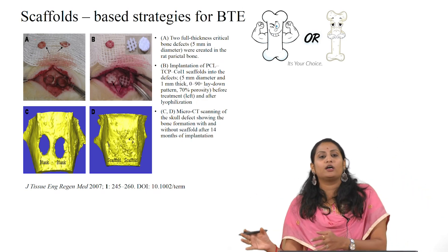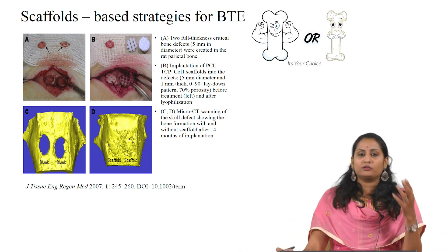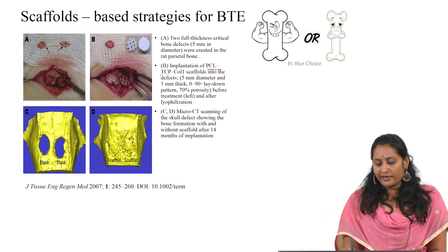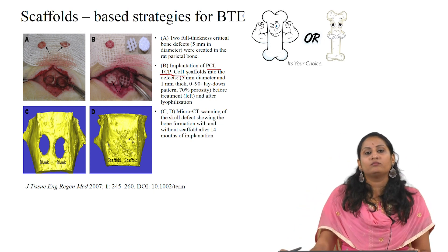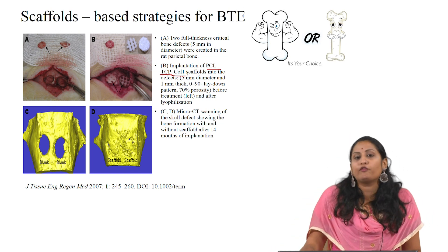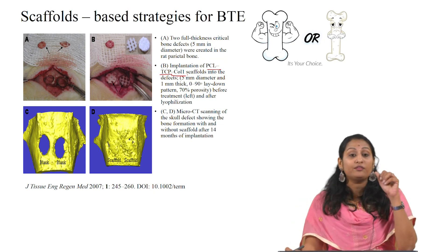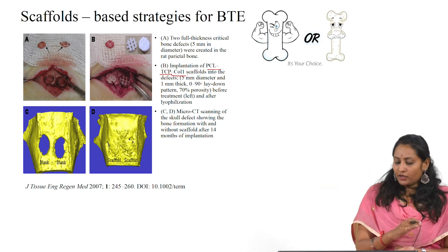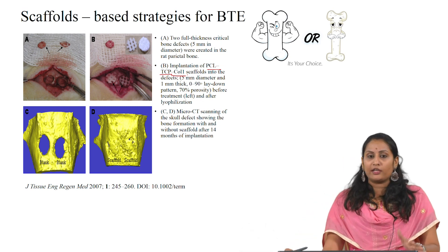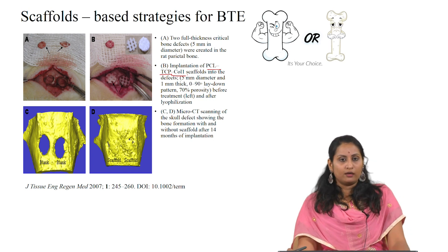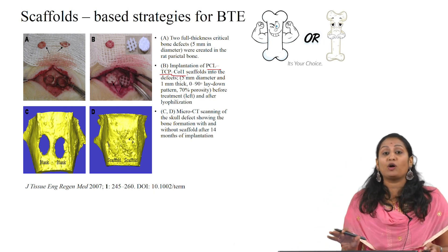They then moved to the second generation of scaffolds, studying PCL and composites. They prepared a scaffold using PCL, tricalcium phosphate, and collagen, then created a 5 mm diameter defect in rat parietal bone and tested for healing. The micro CT scanning image shows that after 14 months there is complete closure of the bone in the presence of the scaffold, compared to the blank control with no scaffold. This was done using PCL and its composites — these are biomimetic scaffolds.